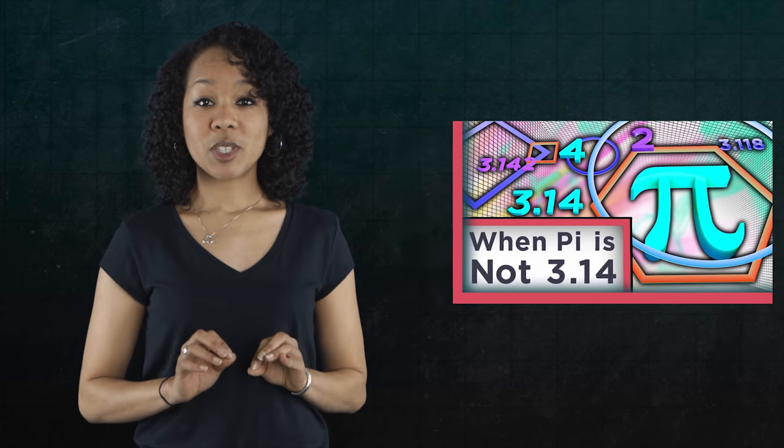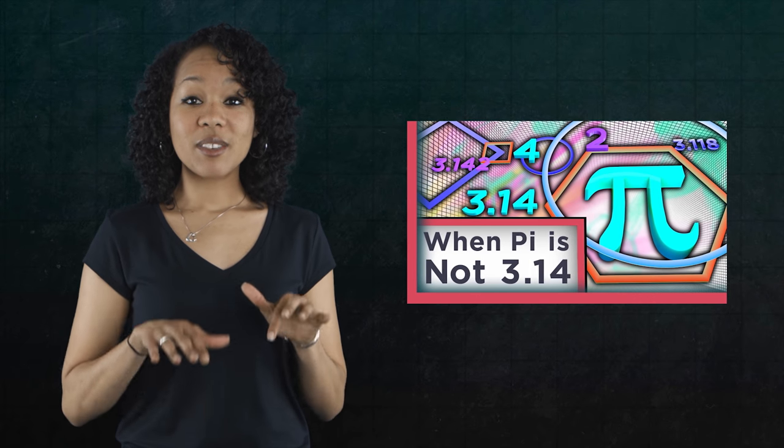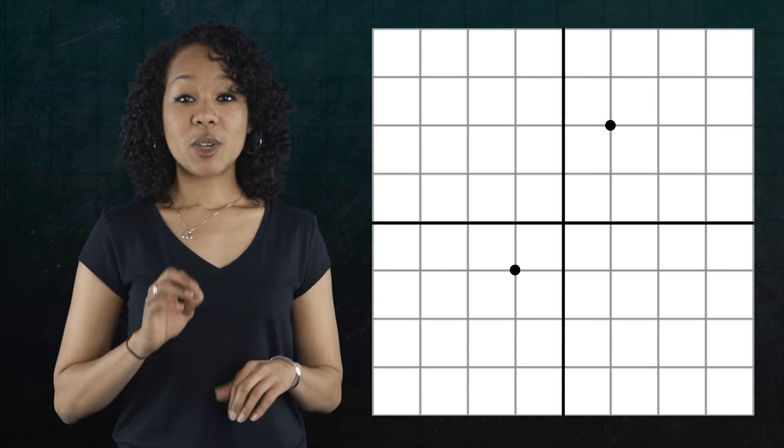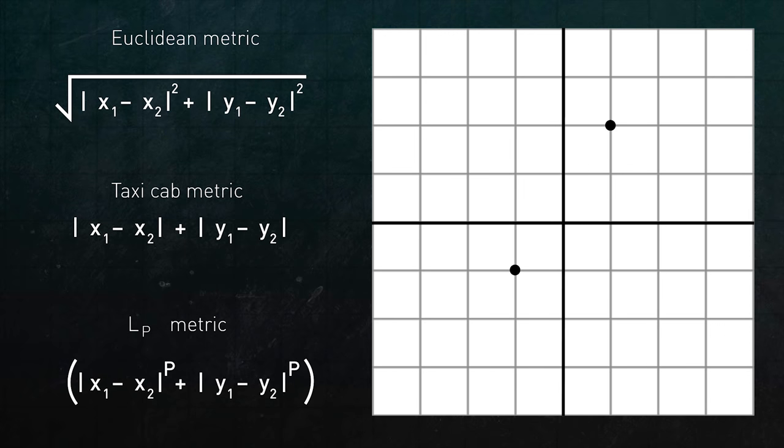Instead of telling you the answer, which we could just read out of a book, let me give you some motivation. A while ago, Kelsey showed us in the episode, When Pi is Not 3.14, that there are lots of ways to measure distance between points on an xy plane. The Euclidean metric is the most familiar, but it's just one of many others, like the taxicab metric and the LP metrics. And if you thought generalizing the Euclidean metric was cool, you're going to love what comes next. We can actually generalize the idea behind a metric itself.